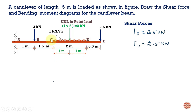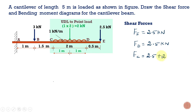Now let us calculate the shear force at C. We have the point load at E of 2.5 kilonewtons and the equivalent point load due to the UDL of 2 kilonewtons. So at point C, the shear force value is 2.5 plus 2, which equals 4.5 kilonewtons.